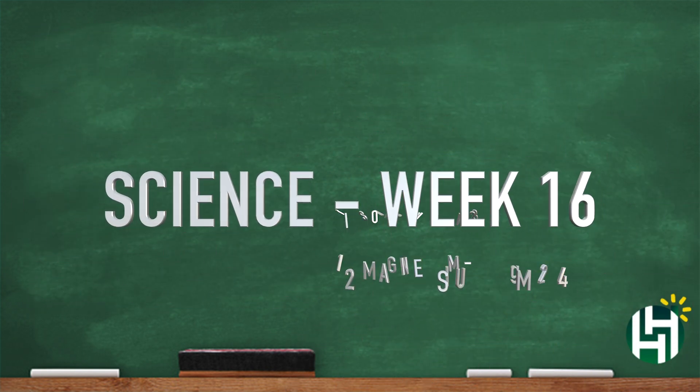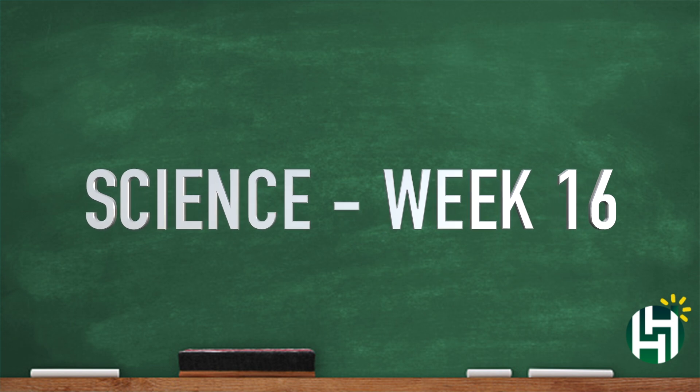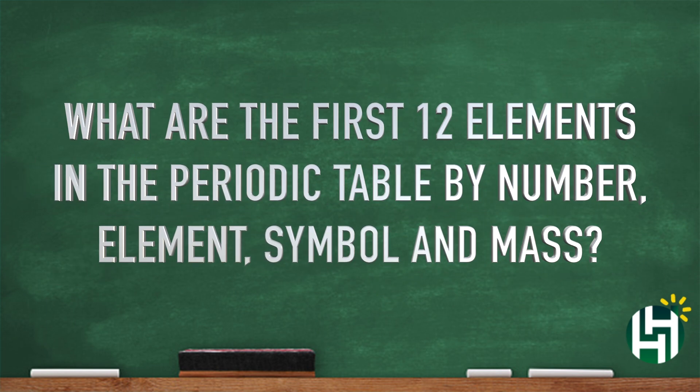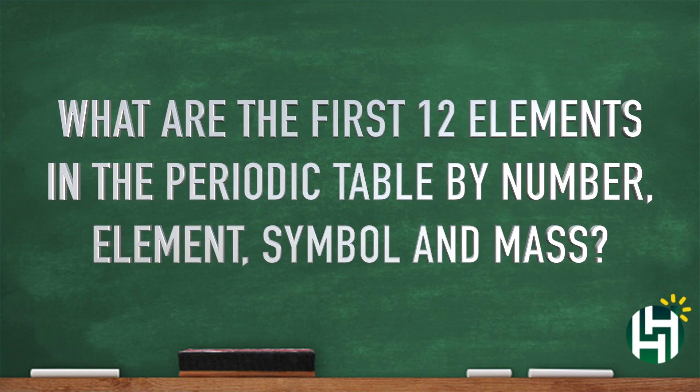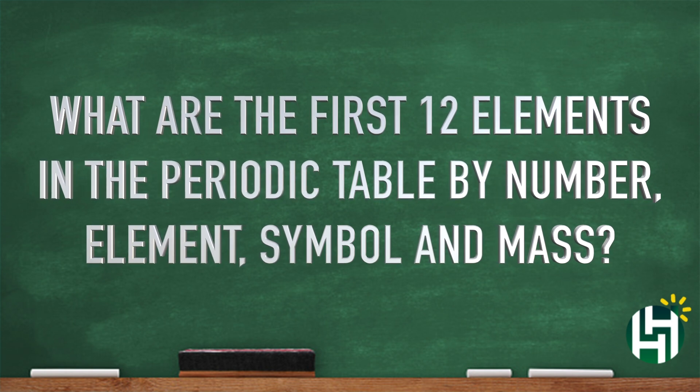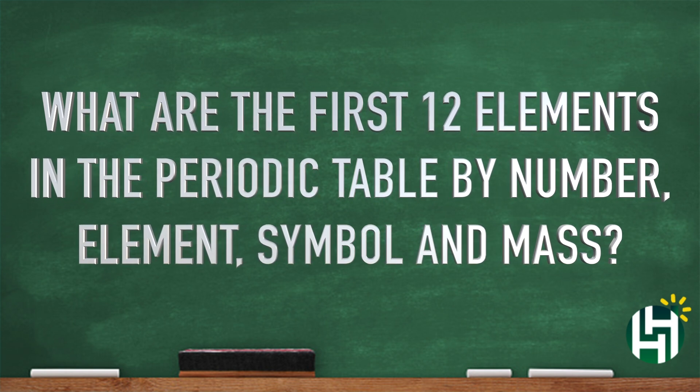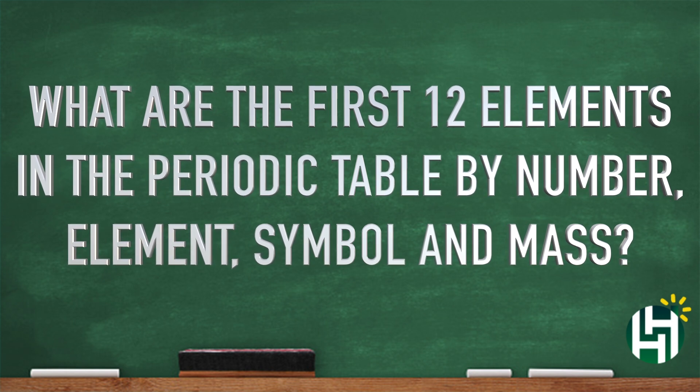Hey, alright, those were the first 12 elements in the periodic table by number, element, symbol, and mass. Hope you enjoyed it. Come back again. Listen to it over and over again so it gets locked inside. And I'm out. Bye! Bye!